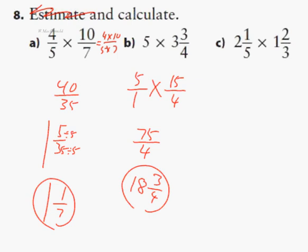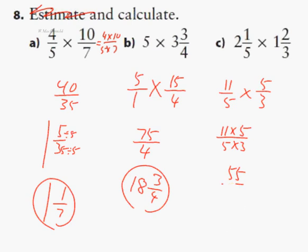For the last part of Q18, convert both to improper fractions: 11 fifths multiplied by 5 thirds. Multiplying numerators and denominators gives 55 fifteenths. That's 45 fifteenths (which is 3) with 10 fifteenths remaining, which in lowest terms is 3 and 2 thirds.